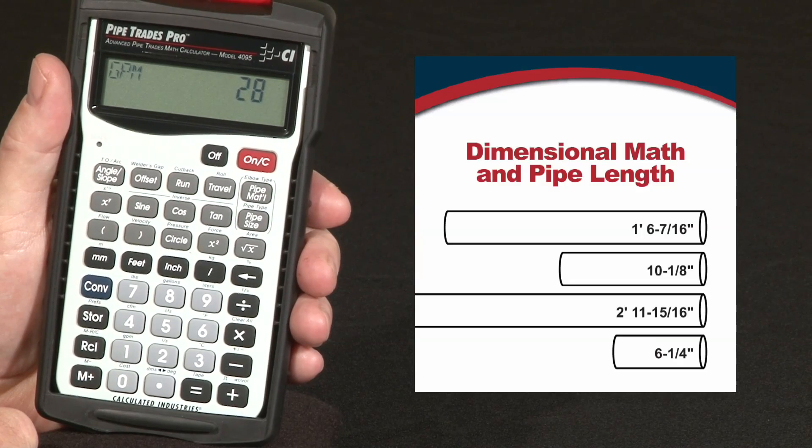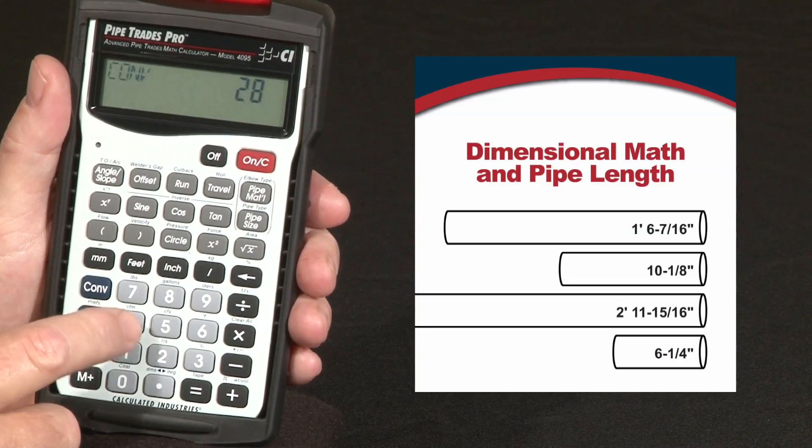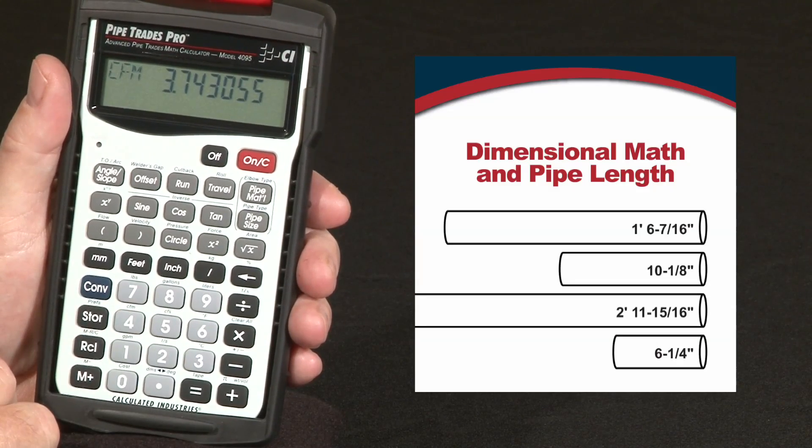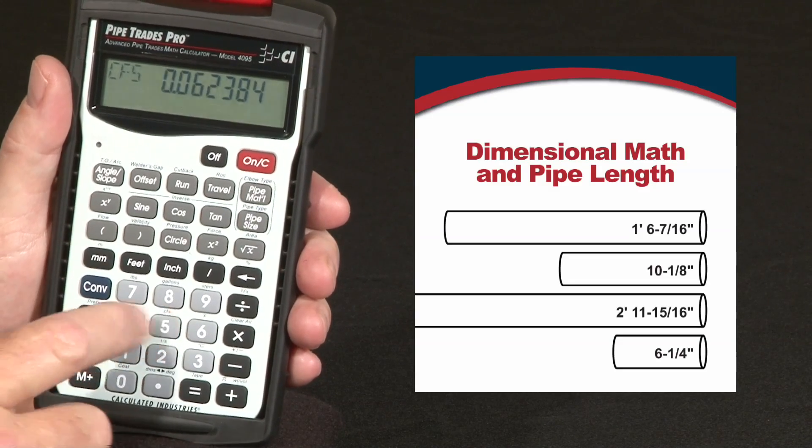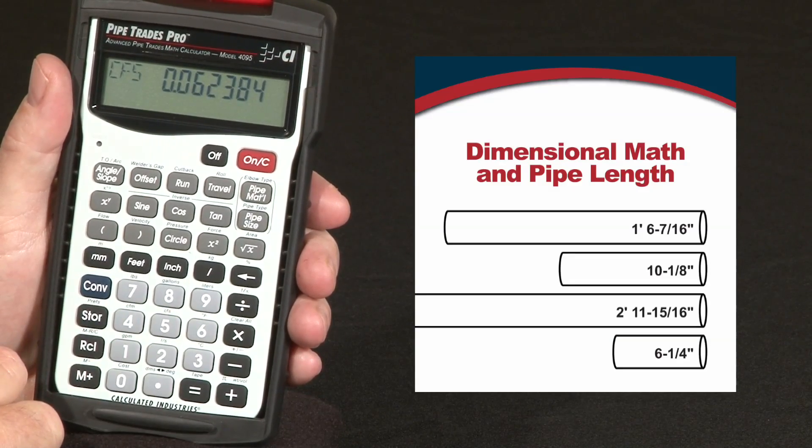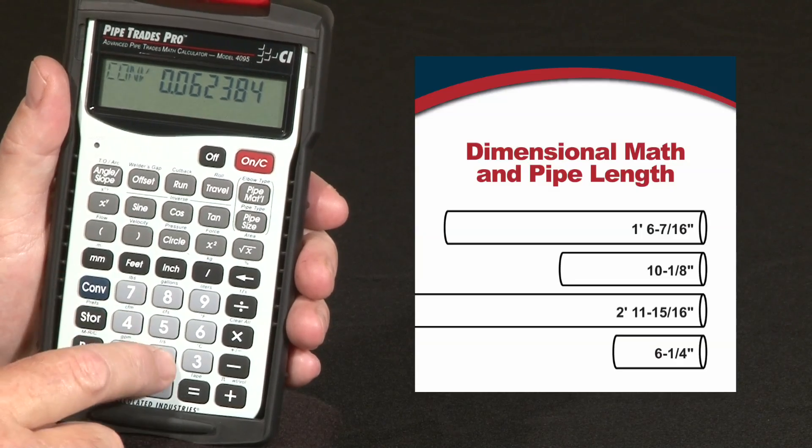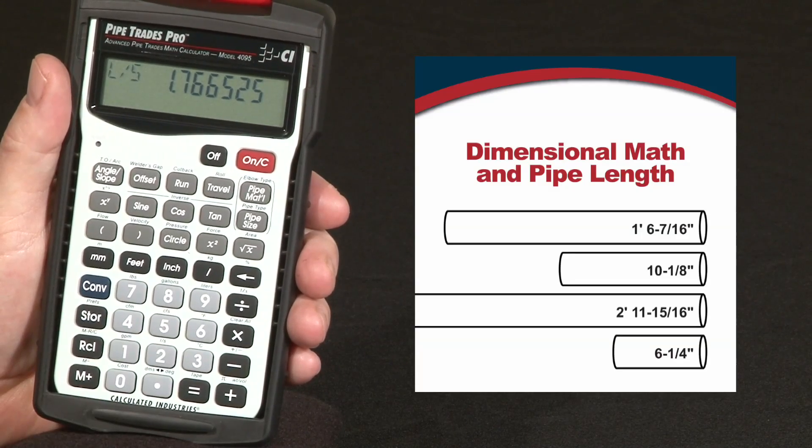If we want to convert to cubic feet per minute, we do convert 4. If we want to do cubic feet per second, we do convert 5, and liters per second convert 2. It's that easy.